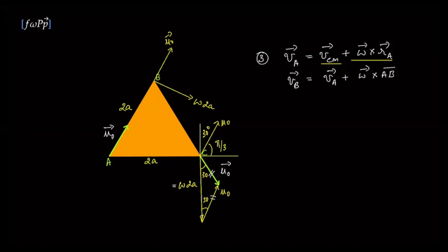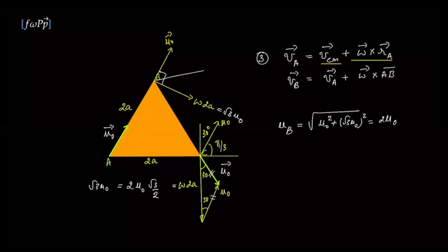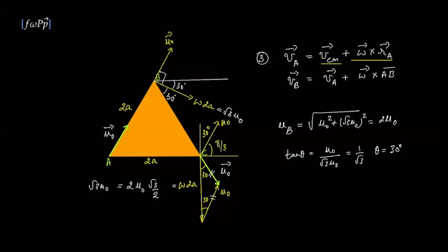From this triangle, the component along the base is 2u0 cos 30 = 2u0 × (√3/2), so ω × 2a = √3 · u0. Taking this back to vertex B: the velocity of B has component u0 along AB and component √3 · u0 perpendicular to it, with 90 degrees between them. The magnitude is √(u0² + (√3 u0)²) = 2u0. The angle θ satisfies tan θ = u0/(√3 u0) = 1/√3, giving θ = 30 degrees, which means the velocity is horizontal. The velocity of B is horizontal with magnitude 2u0.